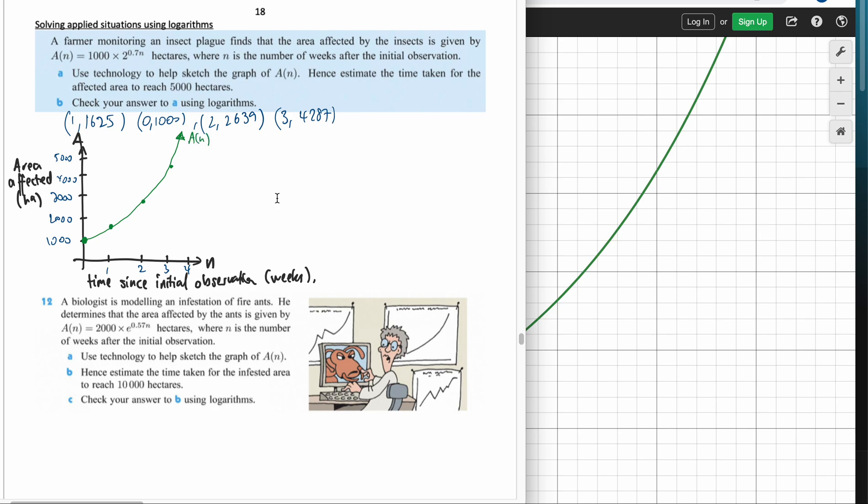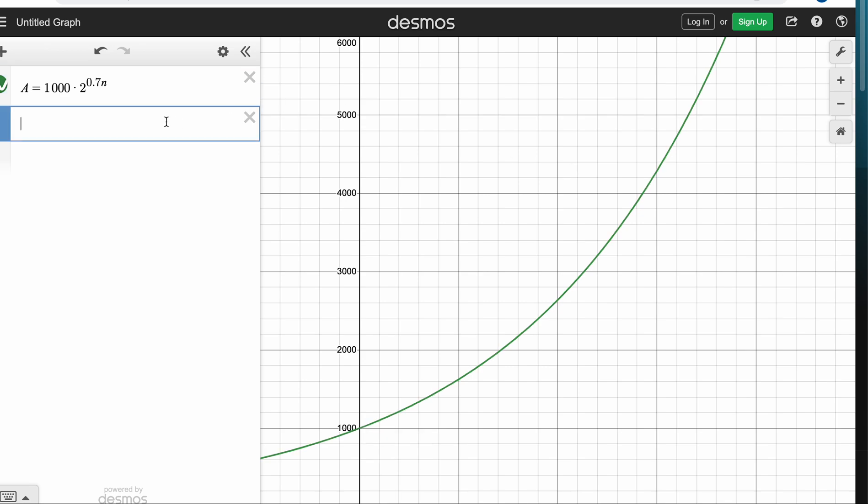Now it says hence estimate the time taken for the affected area. The word estimate is thrown around a lot in the IB course. I'm just going to actually find what that is using the graphing pad. I'm going to put in 5000 and we go across. The intersection is 3.32 and then 5,000. We can always check our graph. If I want to cross on 5,000, yeah, it's actually not such a bad graph. About there.